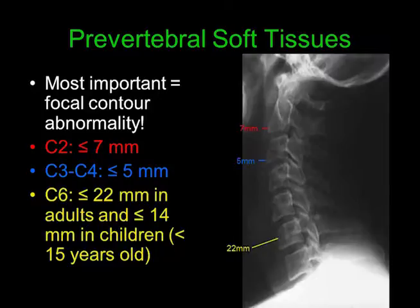When looking at the prevertebral soft tissues, the most important thing to look for is a focal contour abnormality. At the level of C2, the prevertebral soft tissue should be less than or equal to 7 mm in diameter. At the C3-C4 level, they should be less than or equal to 5 mm in diameter. And at the C6 level, they should be less than or equal to 22 mm in adults and 14 mm in children less than 15 years old.